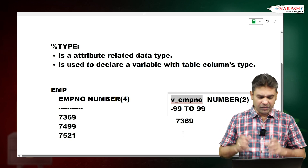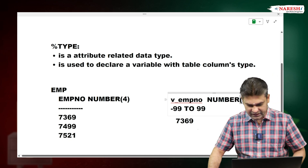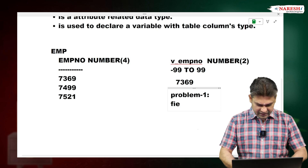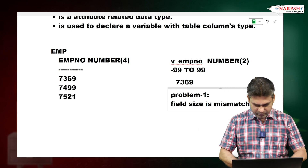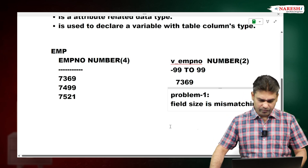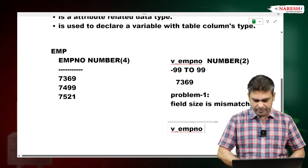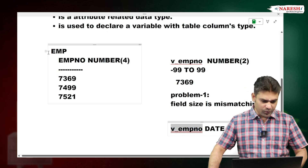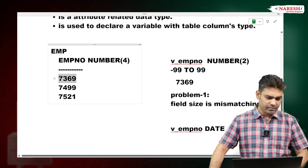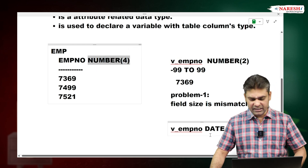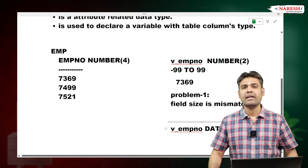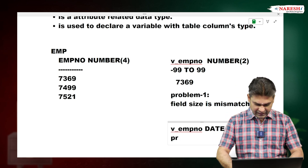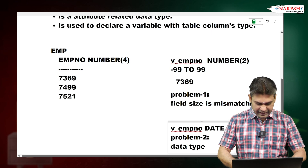Another problem: suppose I declare V_EMPLOYEE_NUMBER as DATE type. Our requirement is to hold the EMP table's employee number column value in this variable. In the table, it is declared as NUMBER type, but in the program we are declaring it as DATE type. A DATE variable cannot hold these numbers. This is Problem 2: data type mismatching.